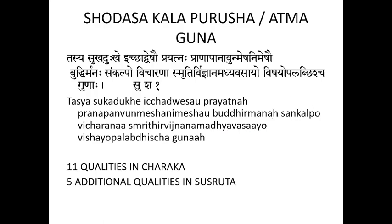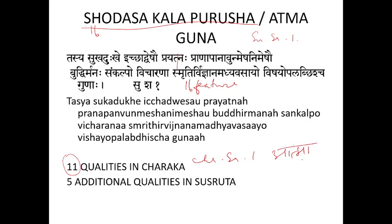The 16 Atma Gunas from Sushruta Sharira Sthana first chapter, Sarvabhuuta Chinda Sharira: Sukham, Dukham, Ichcha, Dvesha, Prayatna, Prana, Apana, Unmesha, Nimesha, Buddhi, Manaha, Sankalpo, Vicharana, Smridhi, Viknanam, Adhyavasayo, Vishyobaladvih. Charaka mentioned 11 of these features as Atma Lakshana; Sushruta adds 5 additional qualities, making a total of 16.